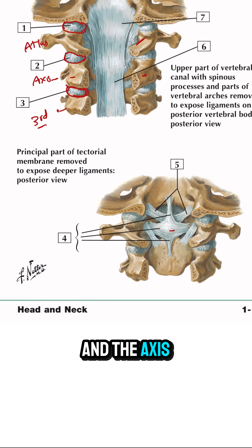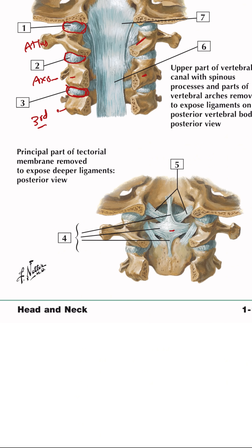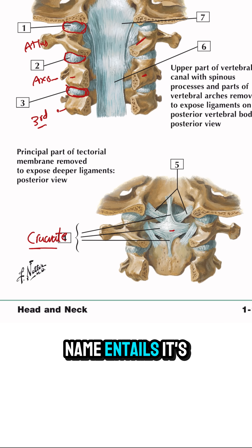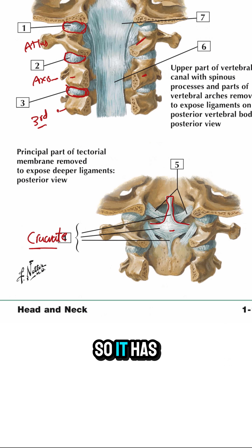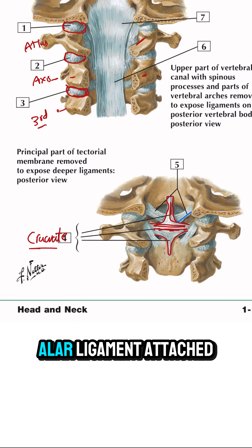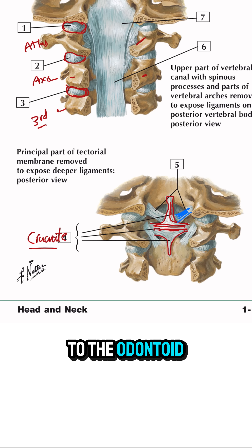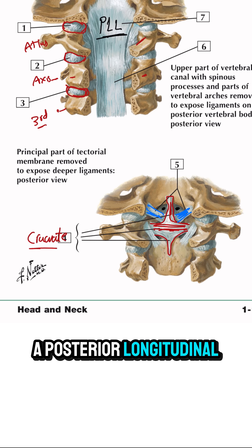There are a few ligaments here to identify between the atlas and the axis — basically three ligaments. This one is called the cruciate ligament, and as the name entails it has a crocheting shape, so it has an ascending limb, a descending limb, and a transverse limb. Just anterior to it you can see the alar ligament attached to the odontoid process, and just anterior to that is the posterior longitudinal ligament.